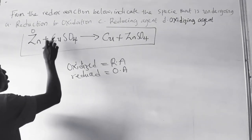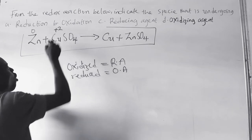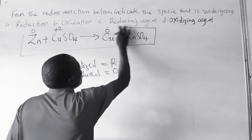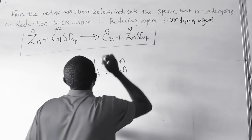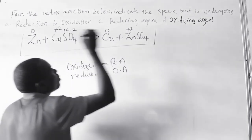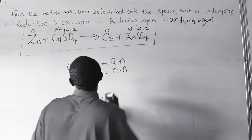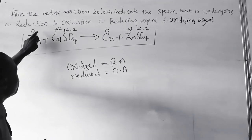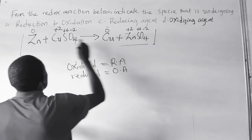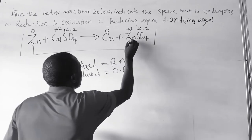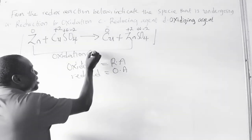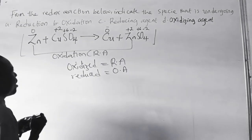The copper here is plus 2, which is copper 2 — sulfate is minus 2 — copper here is 0, and zinc here is plus 2. So the sulfur here is plus 6, oxygen is minus 2, here is plus 6 and also minus 2. Now, from 0 to plus 2 — that is an increase in oxidation number, which means oxidation. For a species to be undergoing oxidation means it is a reducing agent. So the oxidized species here is zinc, and the reducing agent here is also zinc.